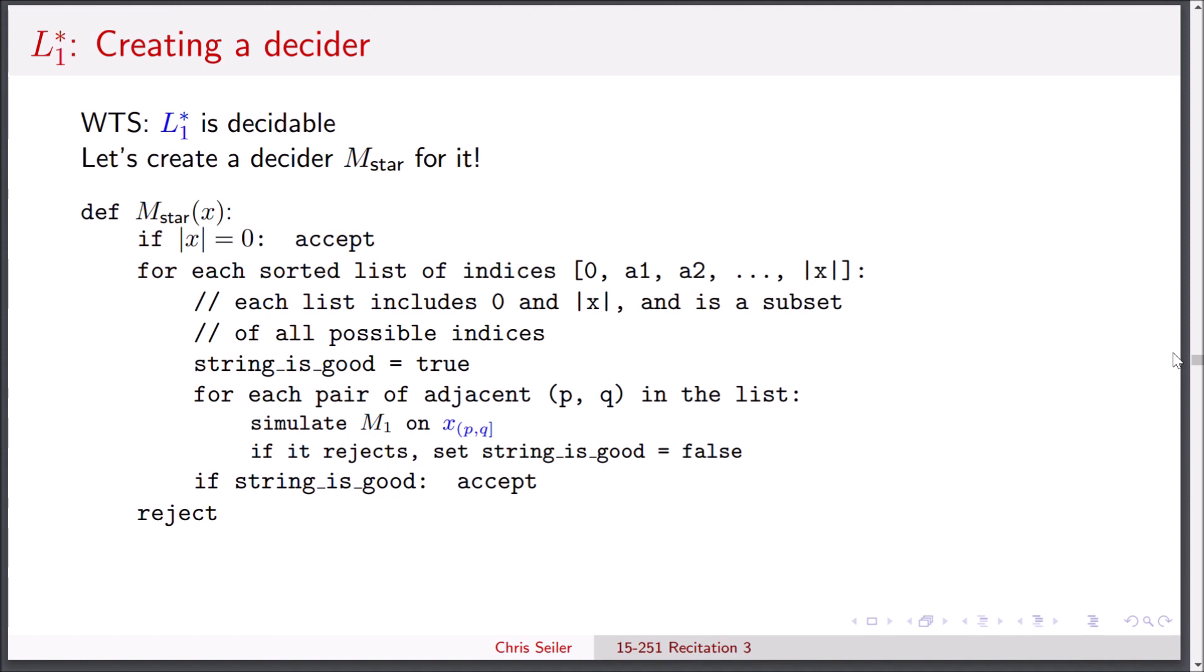It should be fairly clear why this is a working function because we're looking at all of the possible witnesses to show that x is in L1 star, meaning all of the possible ways we can split x and get things in L1. Now we just need to make sure that M star will always halt. We do the outer for loop a finite number of times because there are a finite number of these sorted subsets of indices that we're talking about. And the inner for loop is basically just a traversal of this list, which is also finite. So the only troubling spot could be where we're simulating M1 on the substring. But once again, M1 is a decider, so we know that M1 is always going to halt no matter what the input is. And it turns out that yes, M star is always going to halt, just as we want.